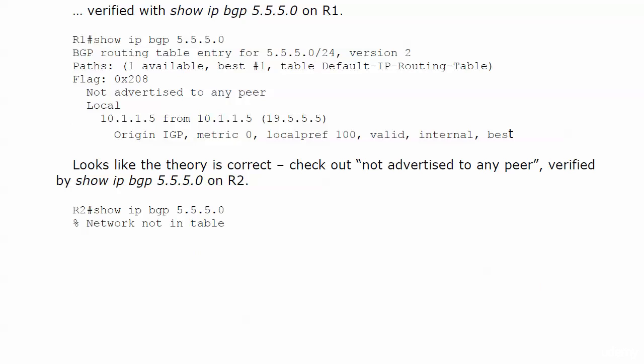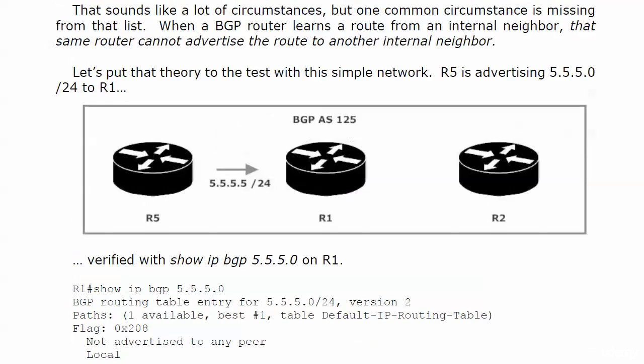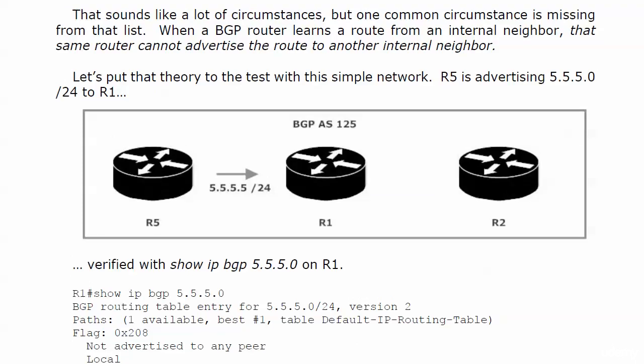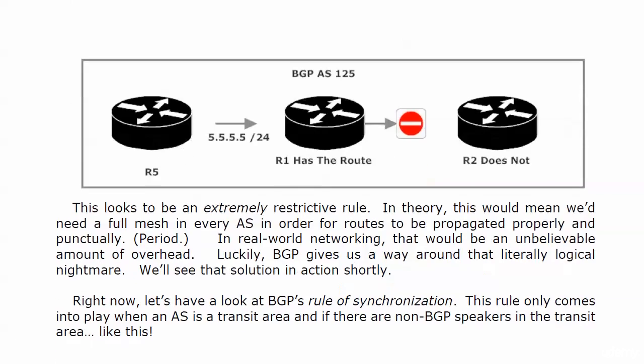If we go over to router 2 and run show IP BGP for that network, we see the network's not in the table. So even though routers 1 and 2 are internal neighbors and the adjacency is fine, router 1 learns about a route from an internal neighbor — router 5 — and will not advertise it to another internal neighbor, that being router 2.